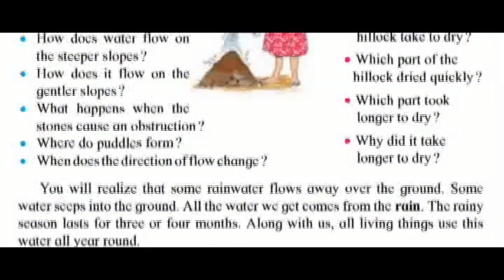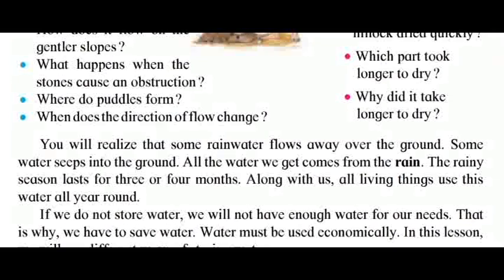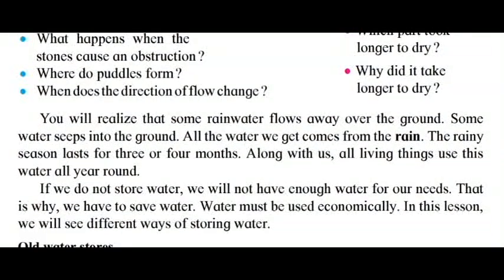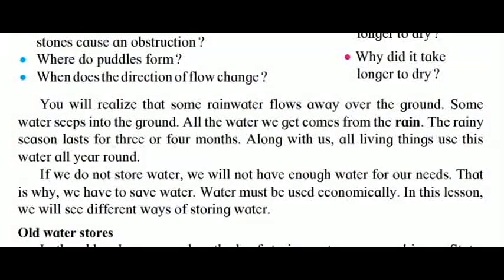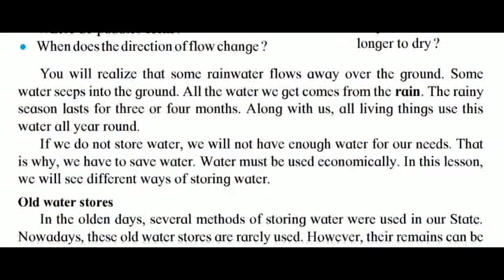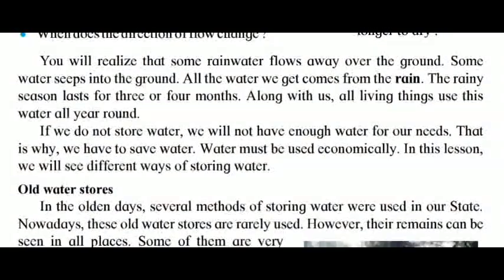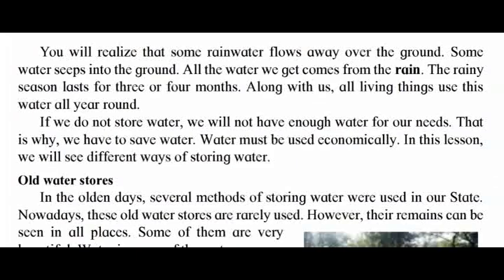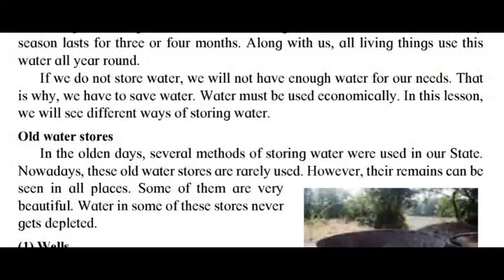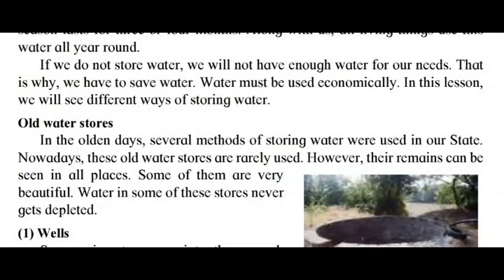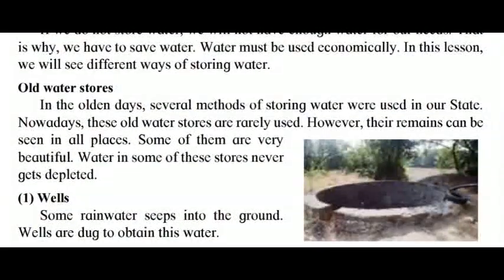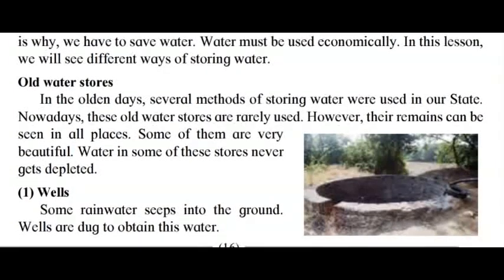Why did it take longer to dry? You will realize that some rainwater flows away over the ground and some water seeps into the ground. All the water we get comes from the rain. The rainy season lasts for only three or four months. Along with us, all living things use this water all year round. If we do not store water, we will not have enough water for our needs. That is why we have to save water.